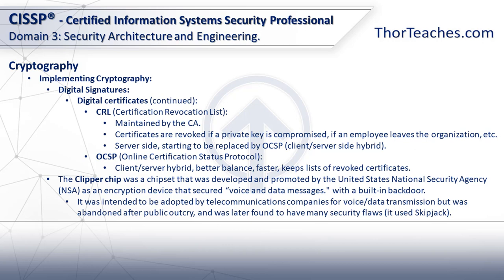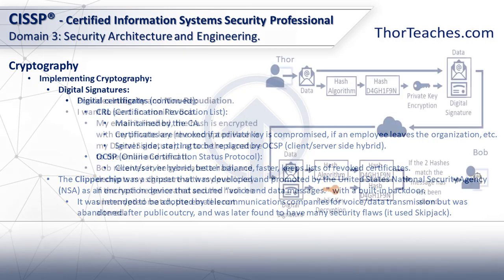Let's look quickly at the Clipper chip. The Clipper chip was a chipset developed and promoted by the US NSA as an encryption device to secure voice and data messages, but they left in built-in back doors so they could listen in. It was basically a little chip that would be embedded in every device to secure us, but in actuality it was just for them to listen in. Luckily, after a huge public outcry when they publicized it, the idea was abandoned. Because after the fact, they discovered a bunch of security holes in it, partly from using the Skipjack cipher, which was never secure.